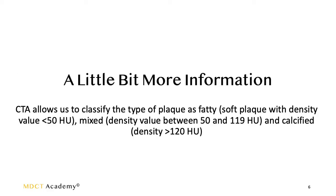CTA allows us to classify the type of plaque. Fatty or soft plaque has a density value less than 50 Hounsfield units. Mixed density plaque is between 50 and 119 Hounsfield units. Anything above 120 Hounsfield units is classified as calcified.